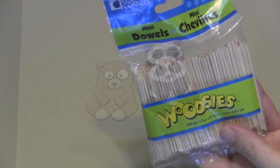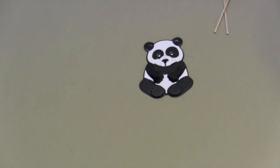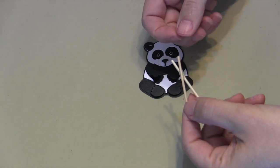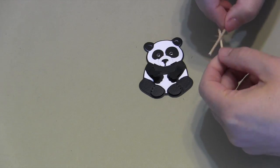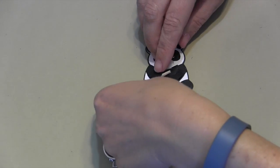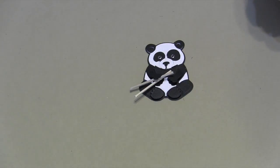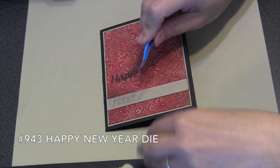I decided to make a little Happy New Year card, so I'm going to use these little woodsy dowels from the craft store. I just hot glued them together so they would look a little bit like chopsticks, and I'm just going to glue that in underneath his little paw.